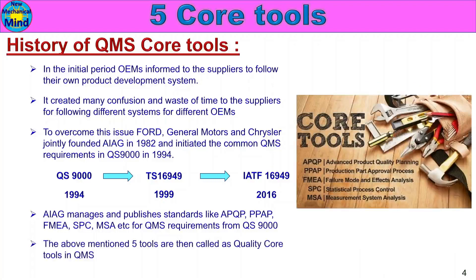The above-mentioned five tools are then called as Quality Core Tools in QMS: APQP, PPAP, FMEA, SPC, and MSA. This is the release of QMS core tools — this is the history of the 5 core tools.